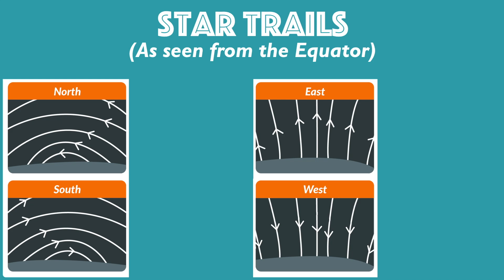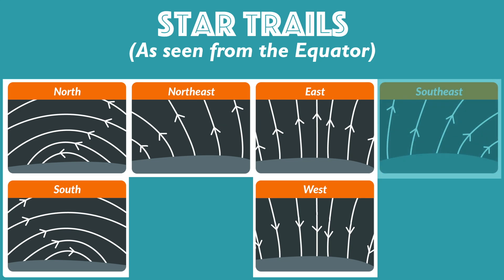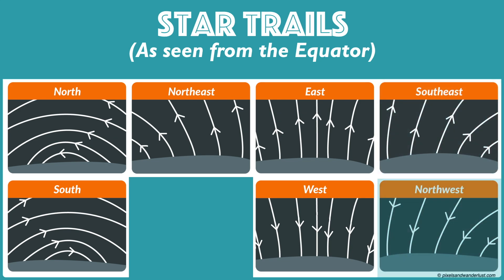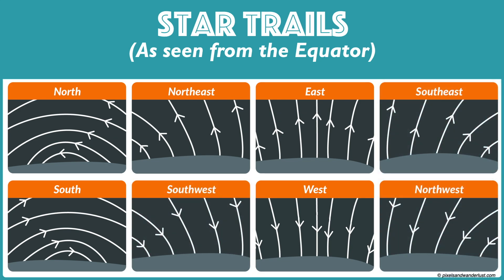To the east and to the west, the stars appear to rise straight up out of the distant horizon in the east and set straight down into it on the opposite side, towards the west. The in-between directions of northeast, southeast, northwest, and southwest tie it all together again, providing the full picture of the star trails of the night sky.